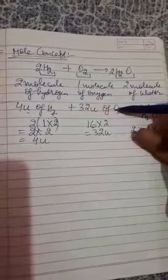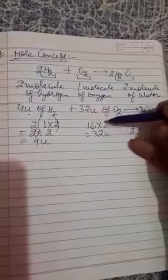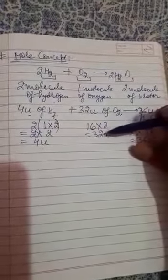Mass of one oxygen atom is 16. Two atoms are there to form one molecule. So we multiply 16 by 2, we get 32.